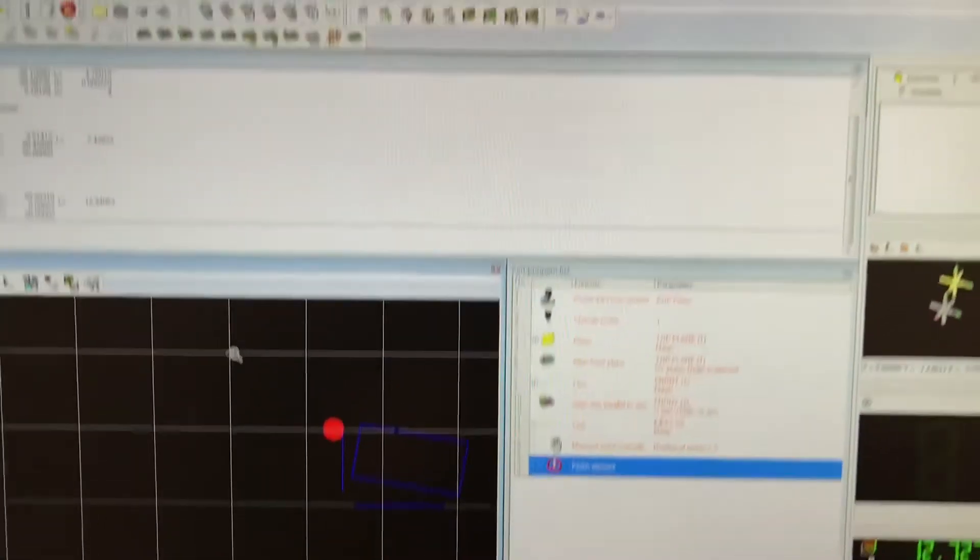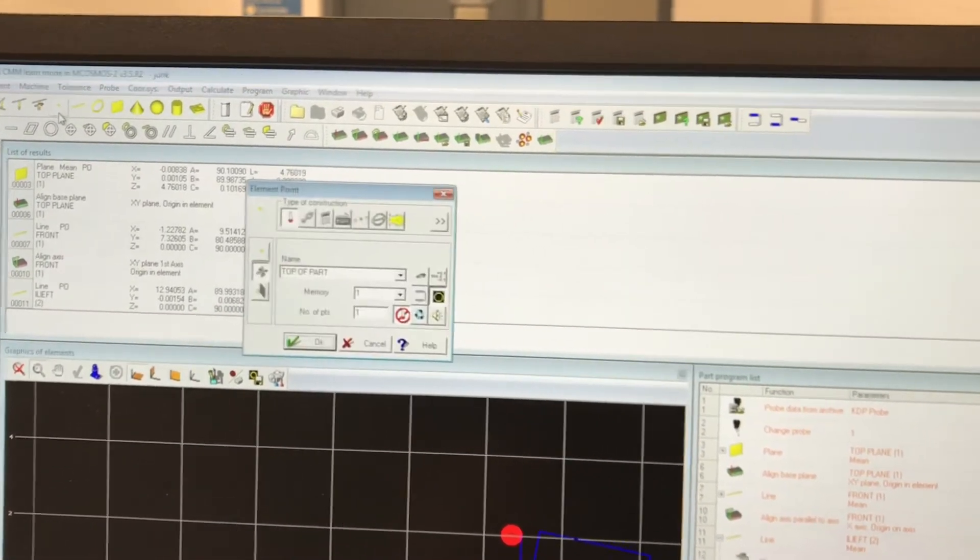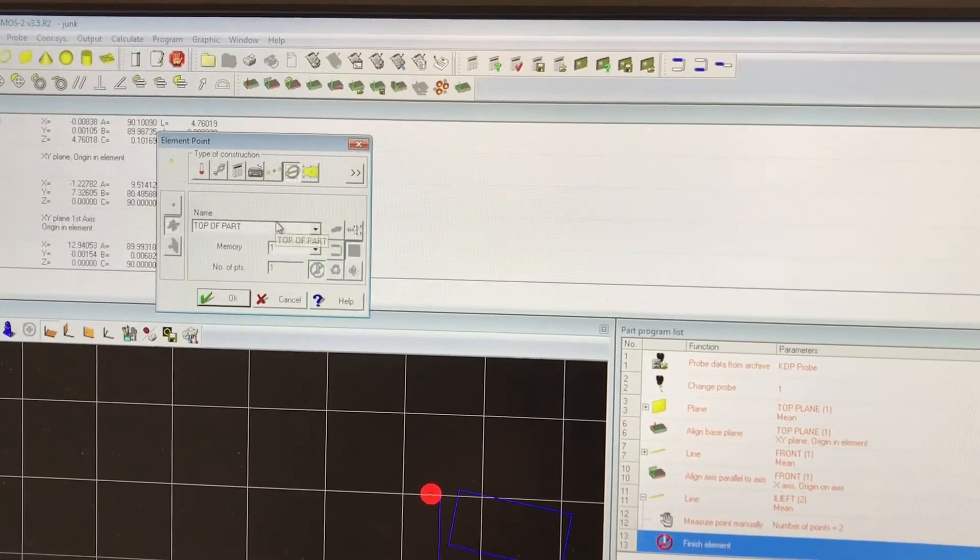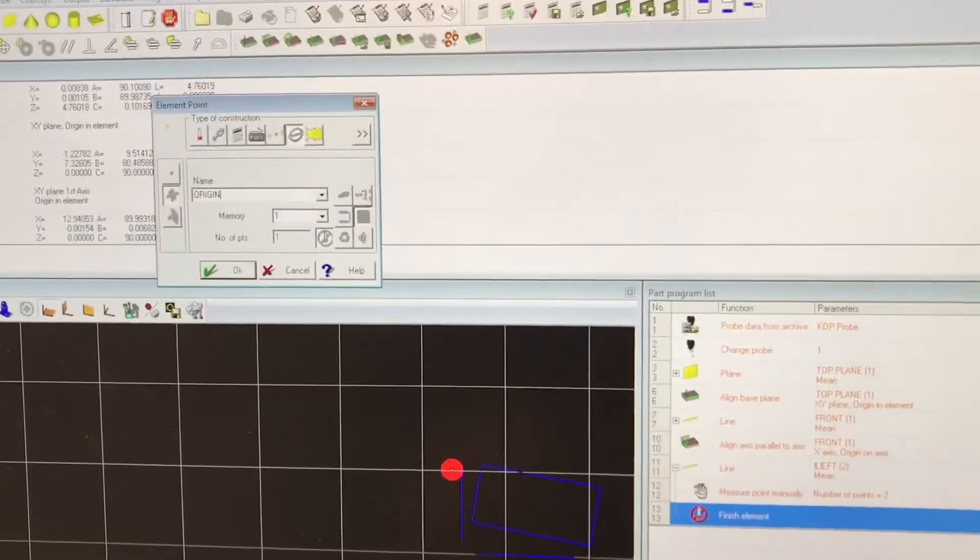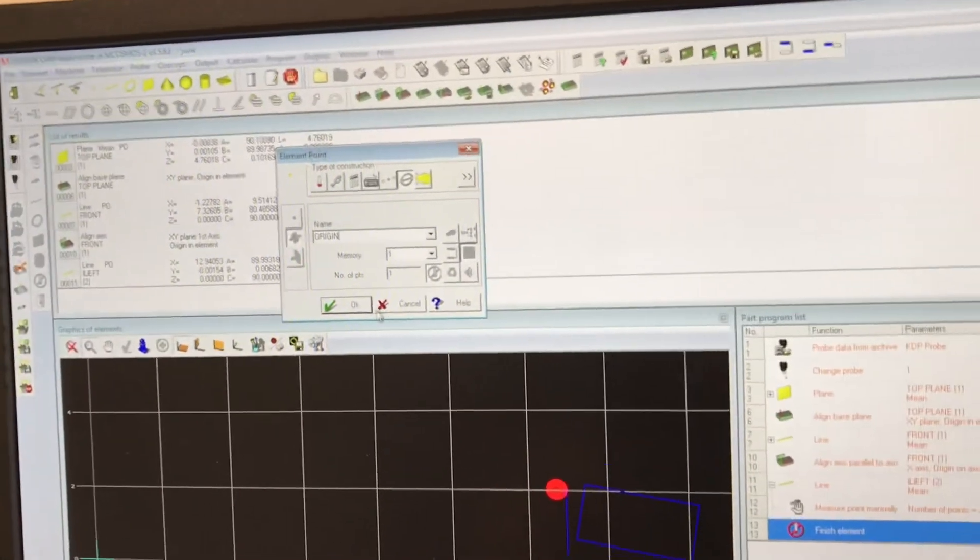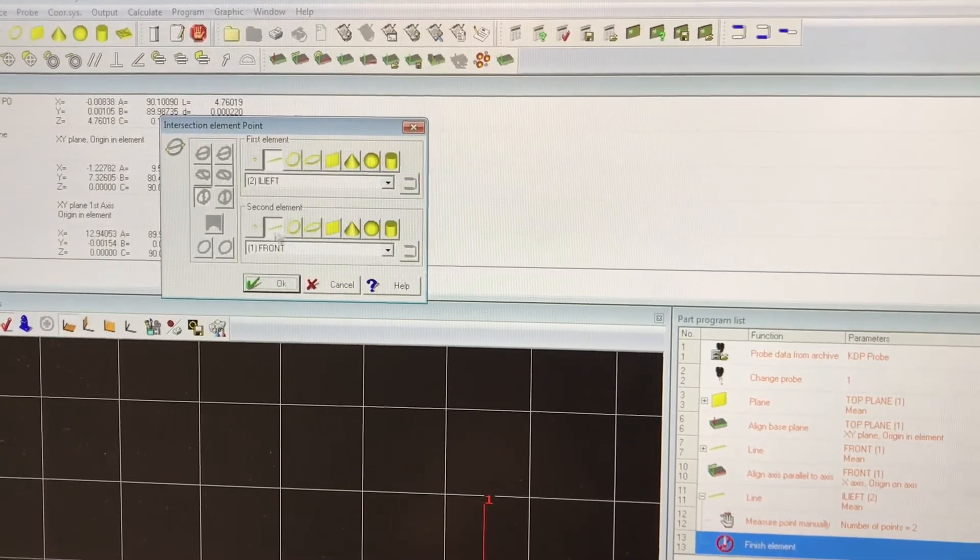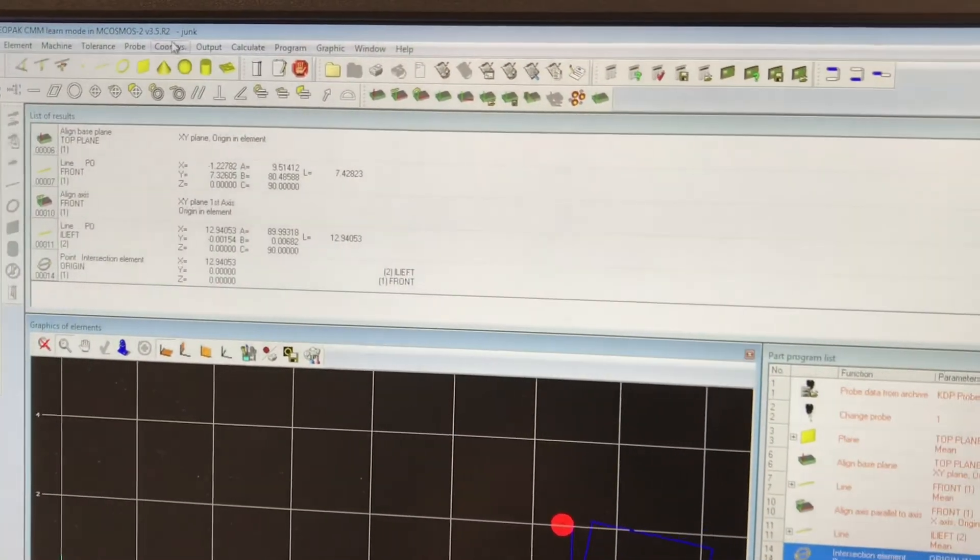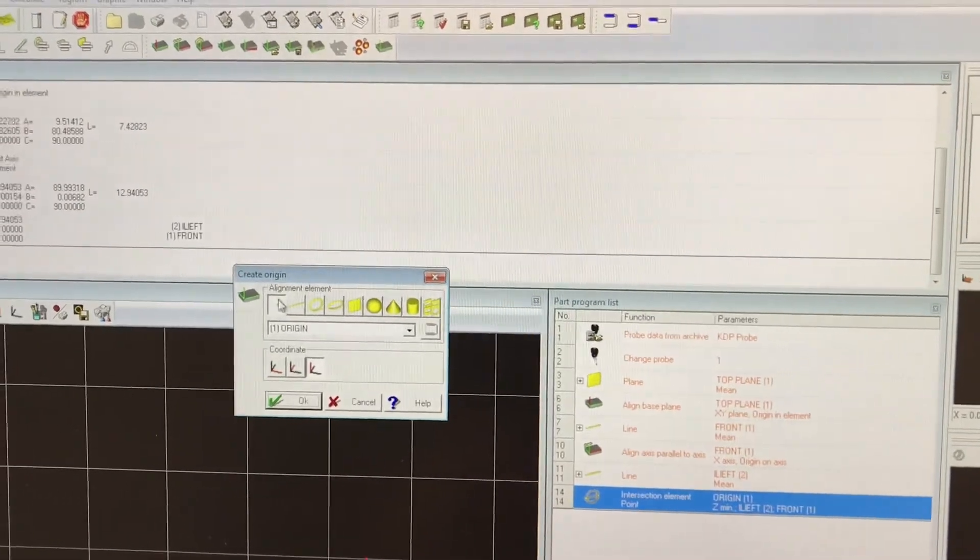Now that I've got that, I want to create a point. Create a point. And I want to make it at the intersection. And I'm going to name this point Origin. I want to create the intersection from the front line to the left line. So now I have a point at my true intersection. I want to call this point create origin. Where do you want your origin at? I want it at my point called origin. So we have manually aligned this part.